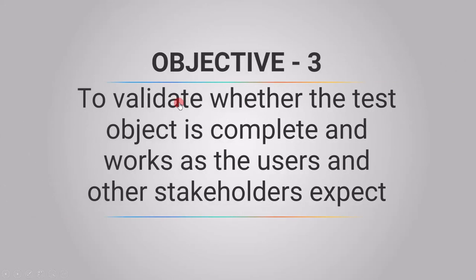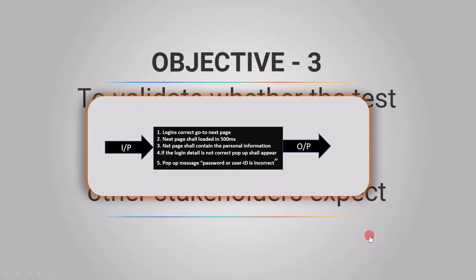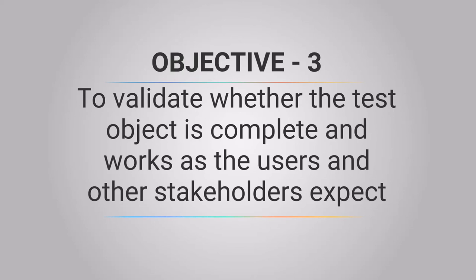The third objective states to check whether the test object is complete and validate if it works as the users and other stakeholders expect. The test object means the object under test. In the requirement stage, the requirement is your test object. In the design stage, the design is your test object, and at the implementation stage, code is your test object. Once the test item is ready, we need to execute it to see if it is fulfilling the customer's requirement.